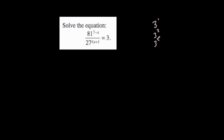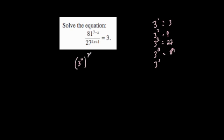The last exam question says: solve 81 to the power of 7 minus x, over 27 to the power of 4x plus 1, equals 3. We have 3, 27, and 81. It's useful to know your powers of 3: 3 to the 1 is 3, 3 squared is 9, 3 cubed is 27, and 3 to the power of 4 is 81. So we're going to change all bases to 3.